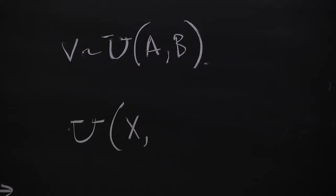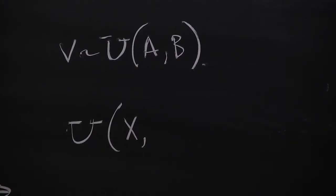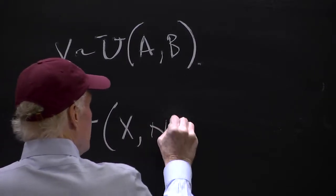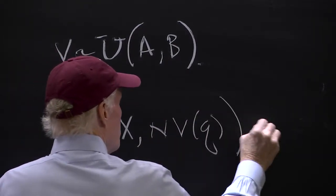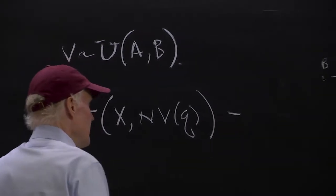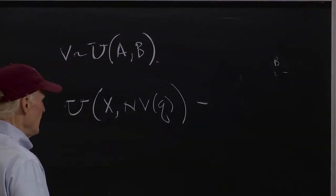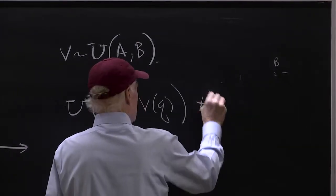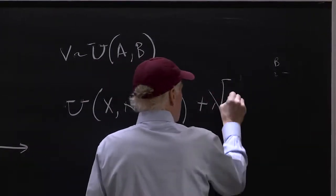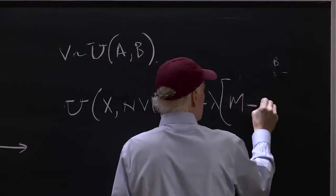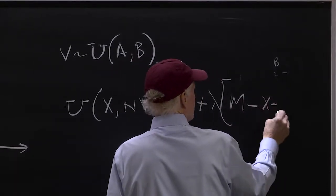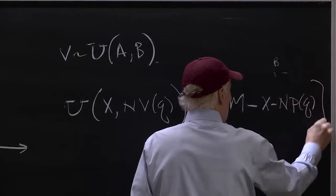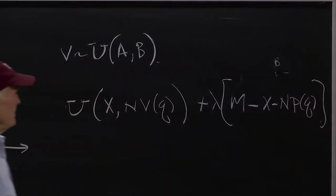Think about if you had a model that says utility equals u of x times, now I assumed you could only buy one unit, which kind of forced you to go on quality. But let's say you did something simpler, you made this an n times v of q, minus, or plus lambda, m minus x minus n p of q.